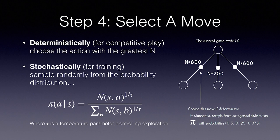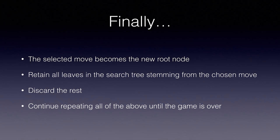Sample an action from the resulting probability distribution. Finally, after selecting the move, the new state after the selected move becomes the new root node. Retain all leaves in the search tree which stem from the chosen move, discard the rest, and continue repeating all of the above until the game is over.